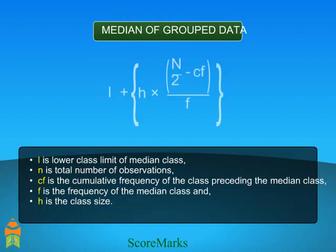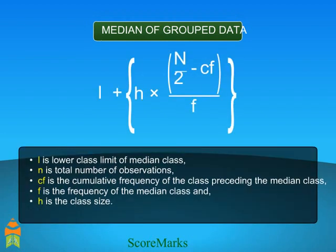Median of grouped data. This is the formula to find median of the grouped data. Where L is lower class limit of median class. N is the total number of observations.